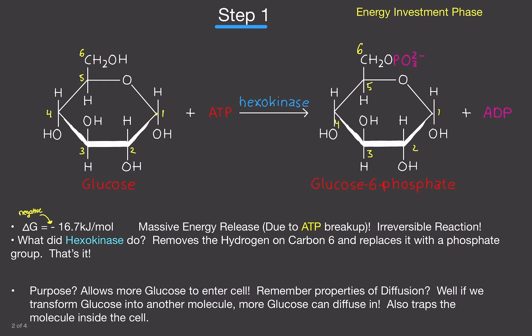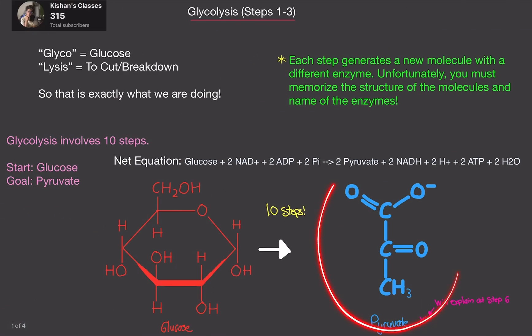And we're going to take it slowly because this is something you should not rush when learning. Okay, step 1. This is called the energy investment phase. Steps 1, 2, 3, 4, and 5 are called the energy investment phase. To actually get pyruvate, it actually requires energy to get there. What we're doing is we're modifying the structure of glucose to actually turn it into pyruvate. But to do this, it requires energy.